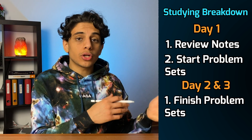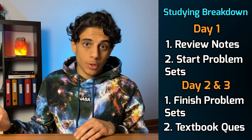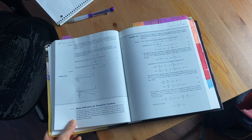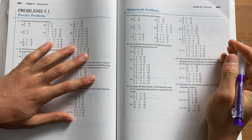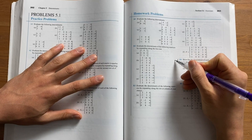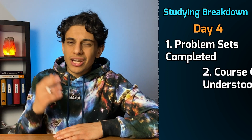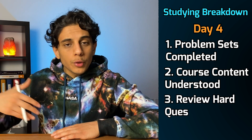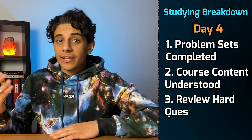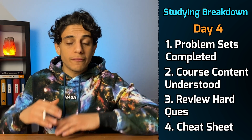If I finish problem set questions early, I'll look over the textbook and do additional textbook questions. When I come across a question I have no idea how to do, I'll look at the solutions to figure it out, but I'll put a star next to it so I know to come back and redo it later without looking at the solution. On my fourth study session, with all problem sets done and a good understanding of the material, I'll spend the first half reviewing the questions I struggled with, then the second half creating a cheat sheet or summary sheet of all the material taught in class.